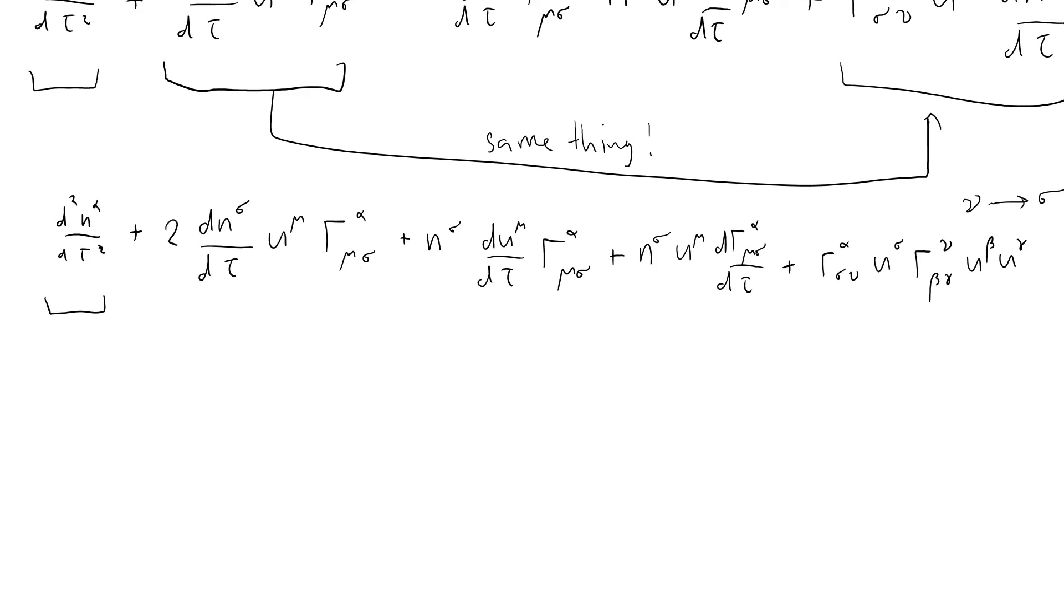Well, the next thing we have to do is to simplify this term here, because we've got a rate of change of a Christoffel symbol with respect to proper time tau, so I'm going to need to change that. I'll do that in the next screencast, but I'll stop here. It's already gone on too long this one.